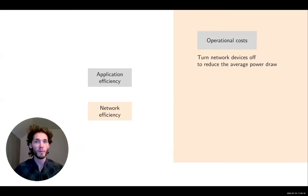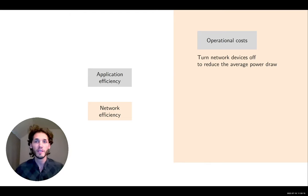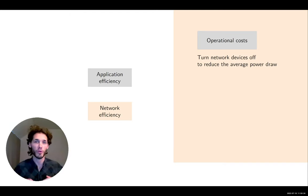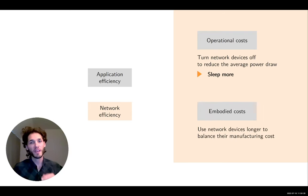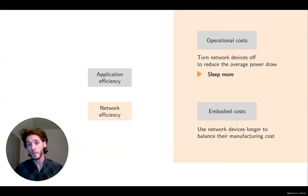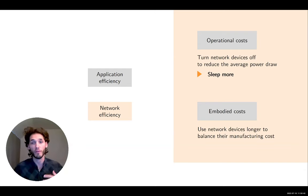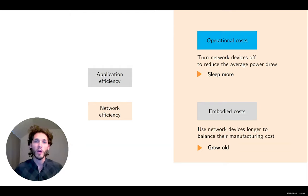In particular, I will pitch two ideas about how to improve that efficiency by tackling two costs. The first is what is referred to as operational cost — the idea is to turn devices off as much as possible to reduce the average power draw of your network. This is what we refer to as 'sleep more.' The second cost is the embodied cost, as touched upon in the keynote, and the idea is simple: we can and should use network devices longer to reduce the overall average cost per year. This is referred to as 'growing old.'